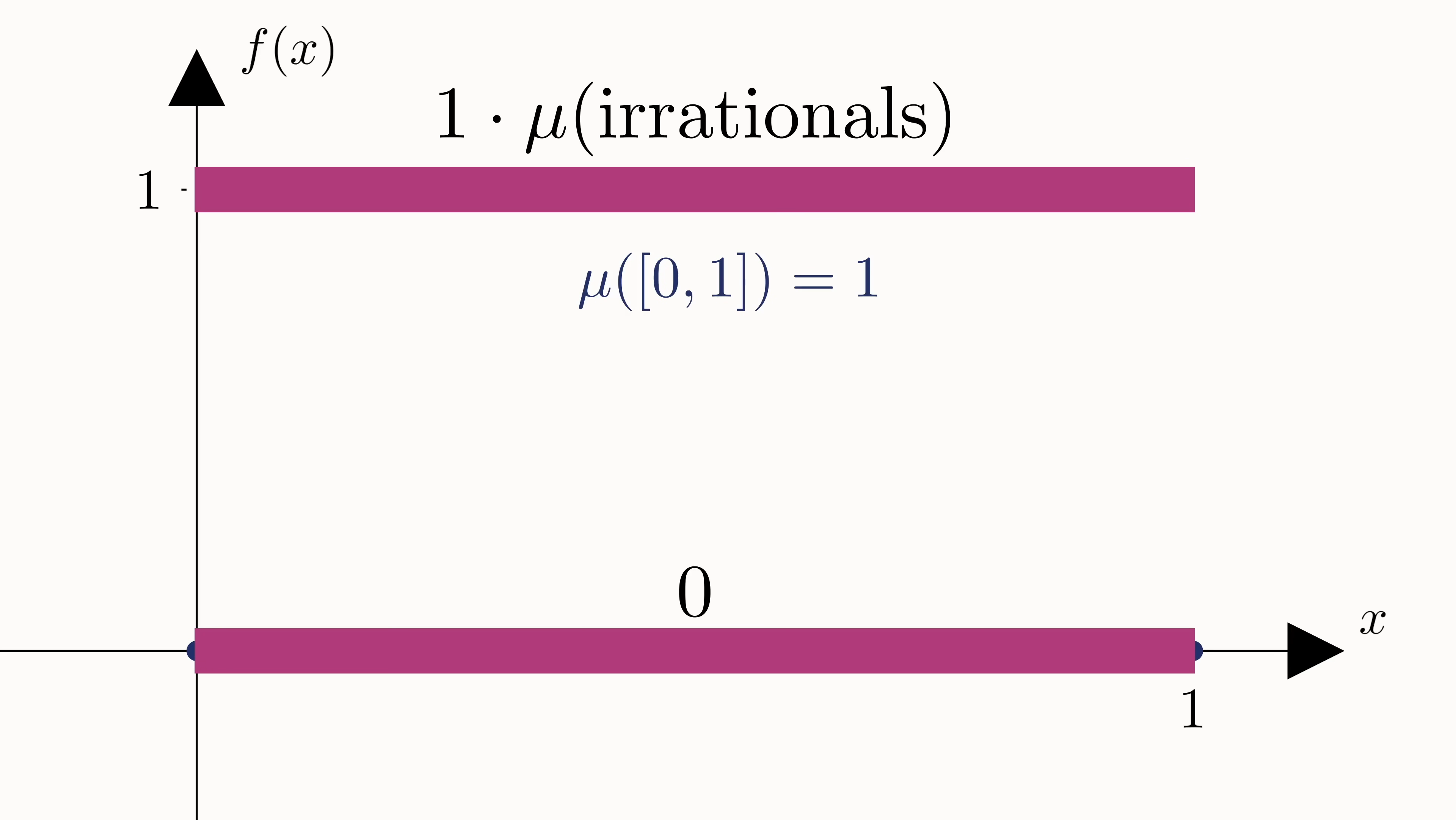We can calculate this from the fact that the entire interval from zero to one has a length of one. This interval consists of all real numbers, but the real numbers are just the union of the rationals and the irrationals. And since the rationals have length zero, the irrationals must have a length of one, which means the Lebesgue integral of this modified Dirichlet function is now one.